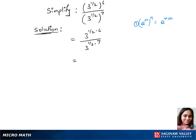Now this gives us 3 to the power 3 over 3 to the power 7 over 2. This looks like Rule 2, and we can use that to write 3 to the power 3 minus 7 over 2, which gives us 3 to the power negative 1 over 2.